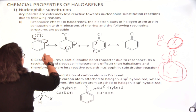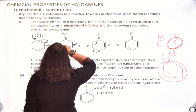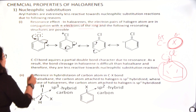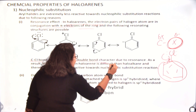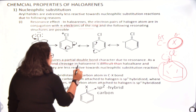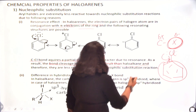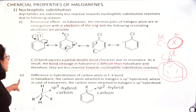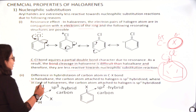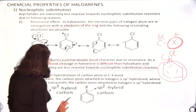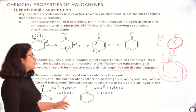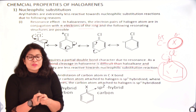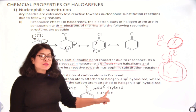The first reason is the resonance effect. In haloarenes, the electron pairs on the halogen atom are in conjugation with the pi electrons of the ring, and the C–Cl bond acquires a partial double bond character due to resonance. As a result, bond cleavage in haloarenes is more difficult than in haloalkanes. The second reason is the difference in hybridization: in haloalkanes the carbon attached to halogen is sp3 hybridized, whereas in haloarenes it is sp2 hybridized. Being sp2, it is more electronegative and pulls the electron cloud more towards itself, making release of X more difficult.